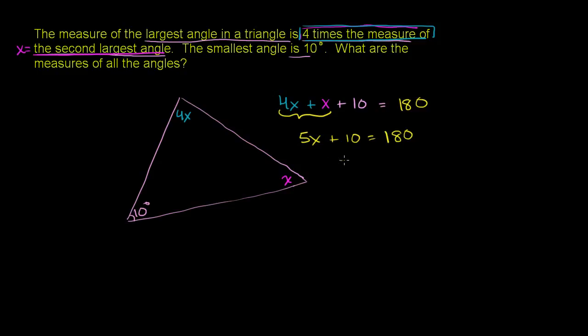Subtract 10 from both sides, so you get 5x is equal to 170. And so x is equal to 170 over 5. Let's see — it'll go into it 34 times.